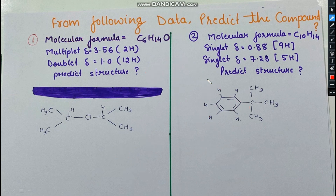Next question. Molecular formula C₁₀H₁₄. We are getting a singlet at δ 0.88 for 9 hydrogens and a singlet at δ 7.28 for 5 hydrogens. A key shortcut: if you are getting a singlet with δ near 7-something, this strongly suggests aromatic protons on a benzene ring. A singlet for aromatic protons means the carbon attached to the ring has no adjacent hydrogens (N = 0, so N+1 = 1, a singlet). We can also verify a benzene ring using the formula CₙH₂ₙ₋₆.